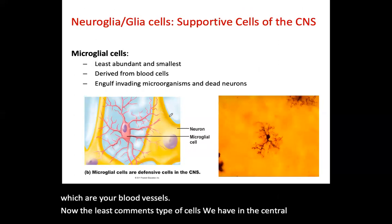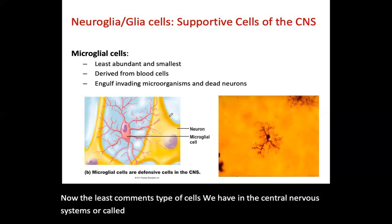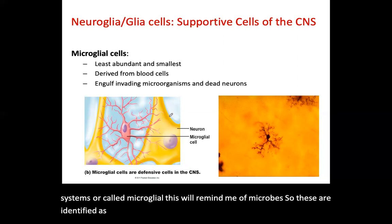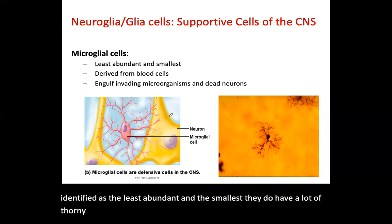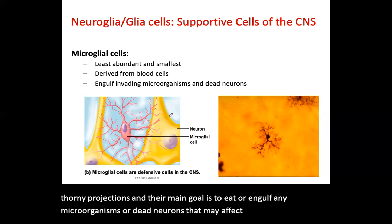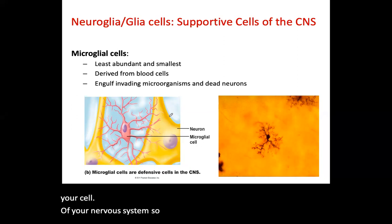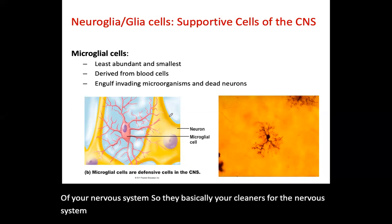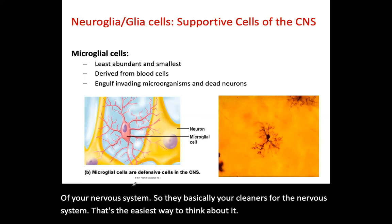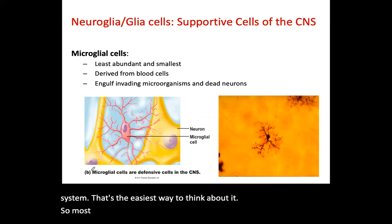Microglial cells are the least abundant and smallest cells in the central nervous system. They have thorny projections and their main goal is to engulf and eat any microorganisms or dead neurons that may affect the functionality of the nervous system — essentially acting as the cleaners of the nervous system. To summarize: astrocytes are the most common supporting cells, and microglial are the least common.